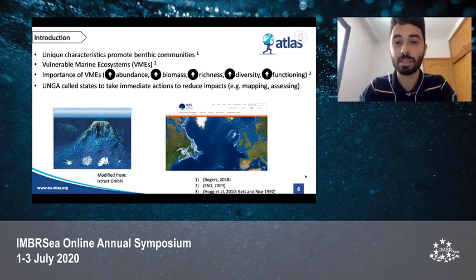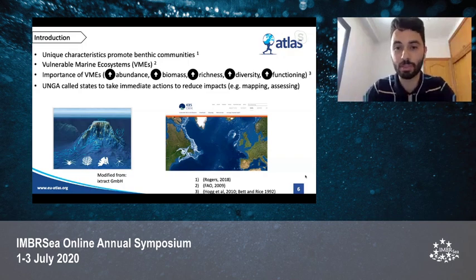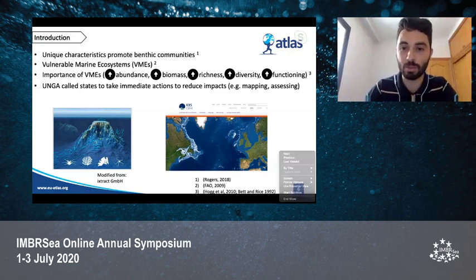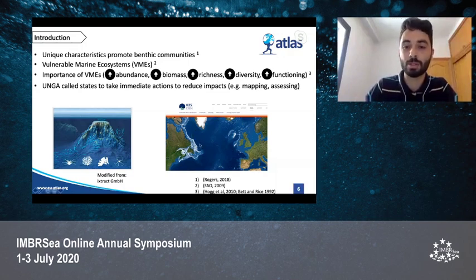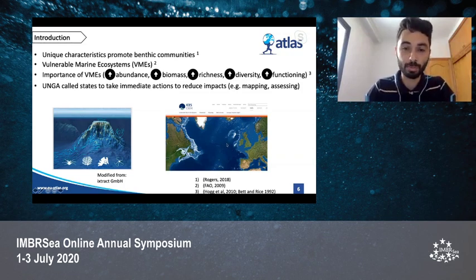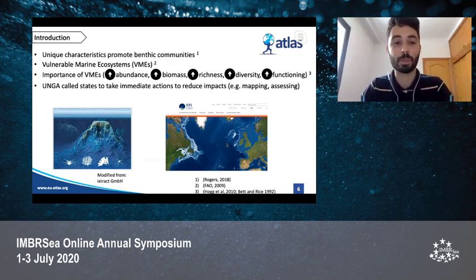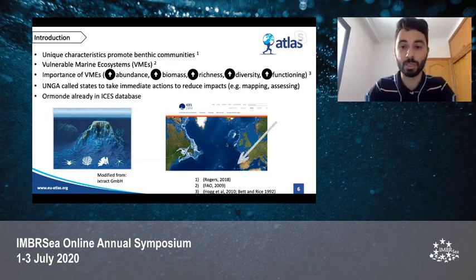That is the case of the ISIS web tool, which has a map where white dots are VMEs. However, as you can see, there are many places poorly explored — and that is the case of Ormonde Seamount. Because of this expedition, it was already included, and it's right here on the map.